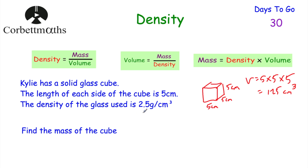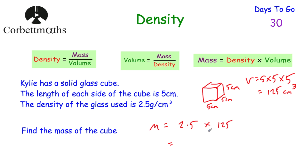The density is 2.5 grams per centimetre cubed, meaning every centimetre cubed has a mass of 2.5 grams. Using mass equals density multiplied by volume: 2.5 × 125 = 312.5 grams. So the mass of the cube is 312.5 grams. Well done if you got that.